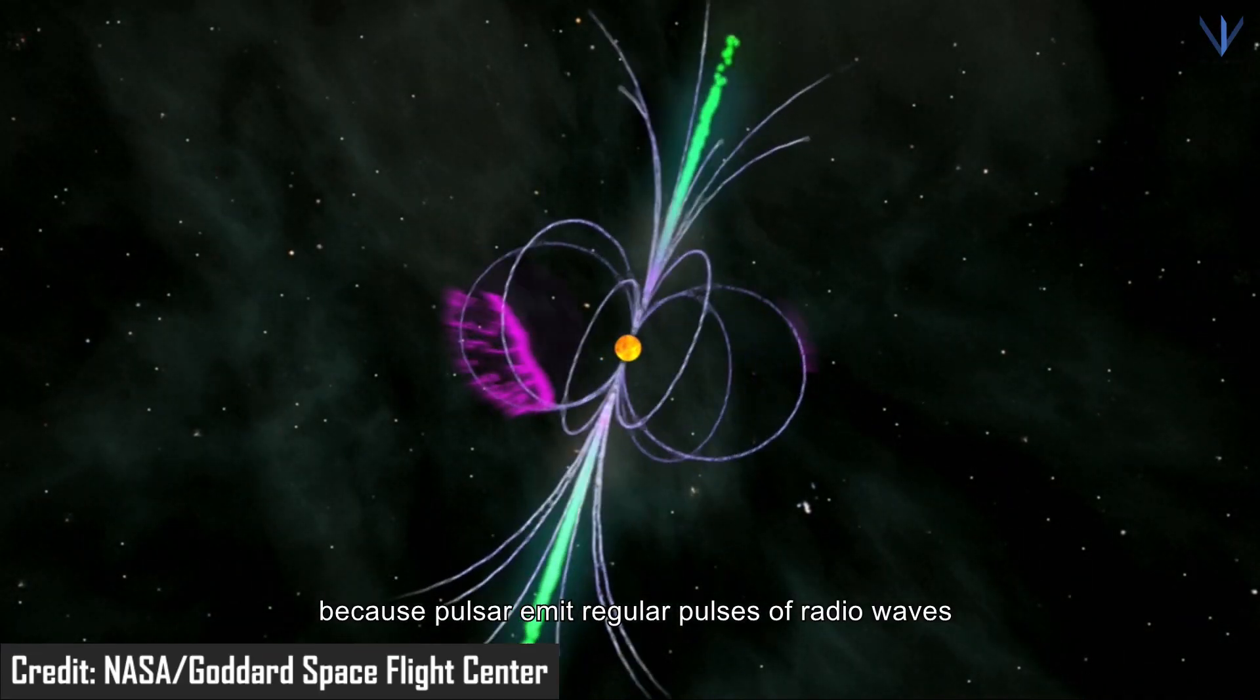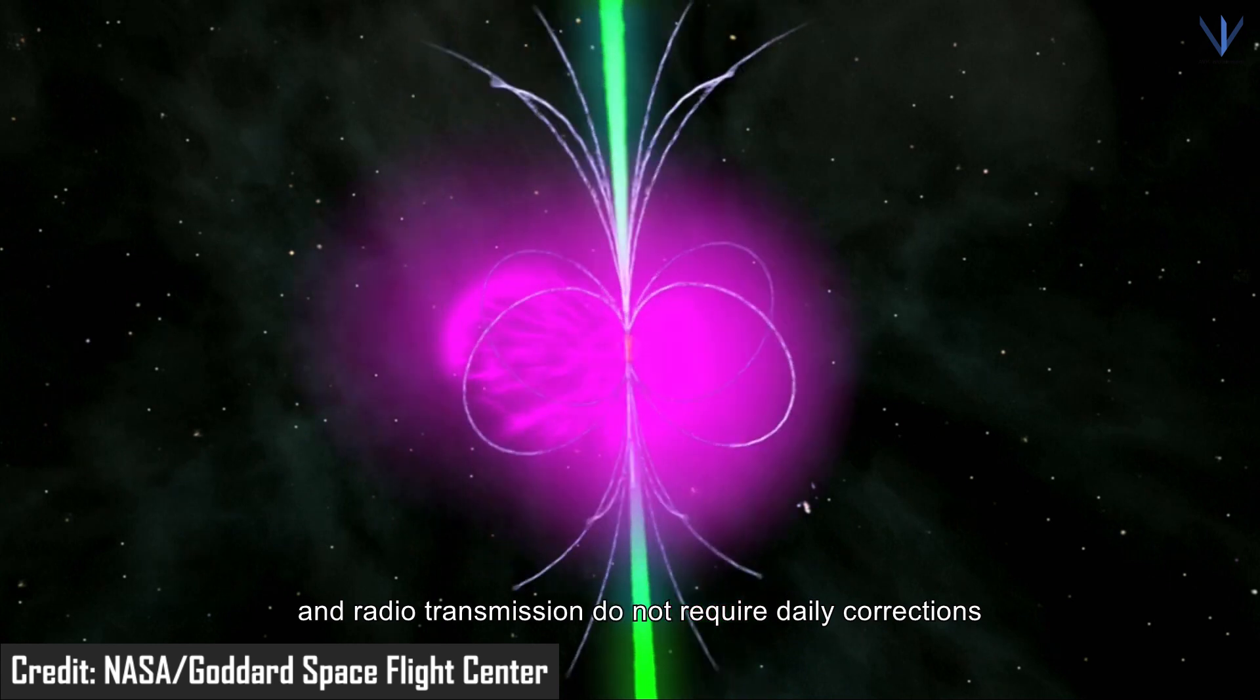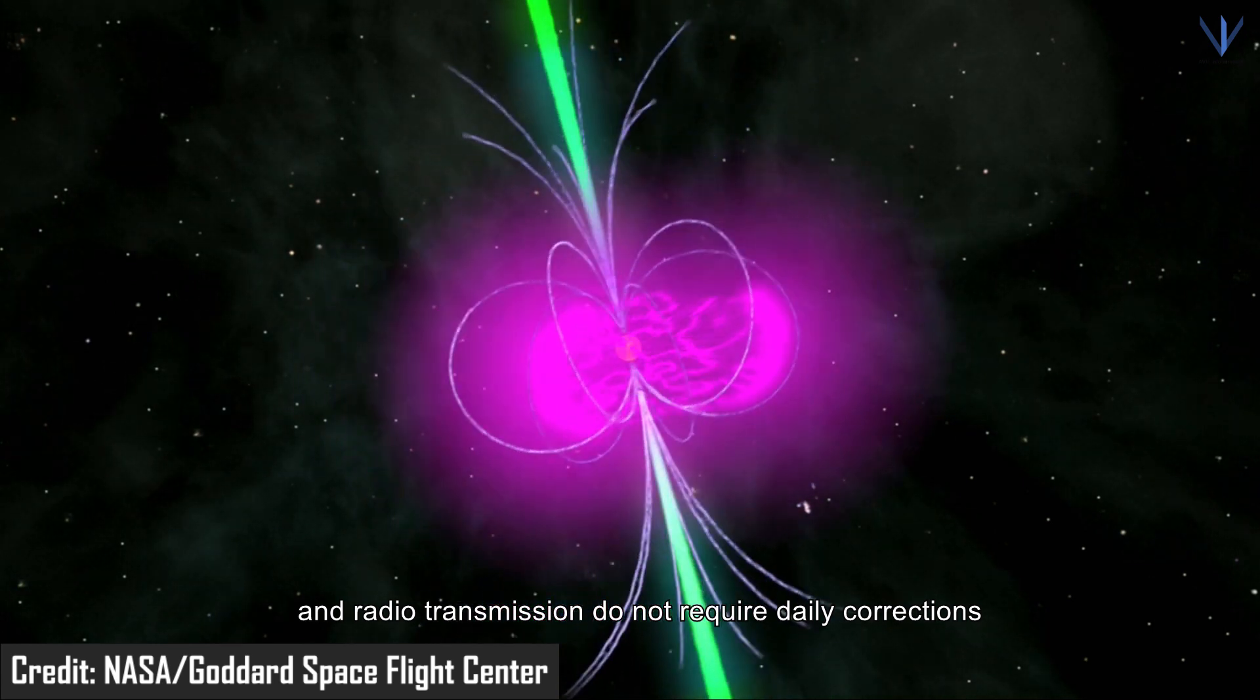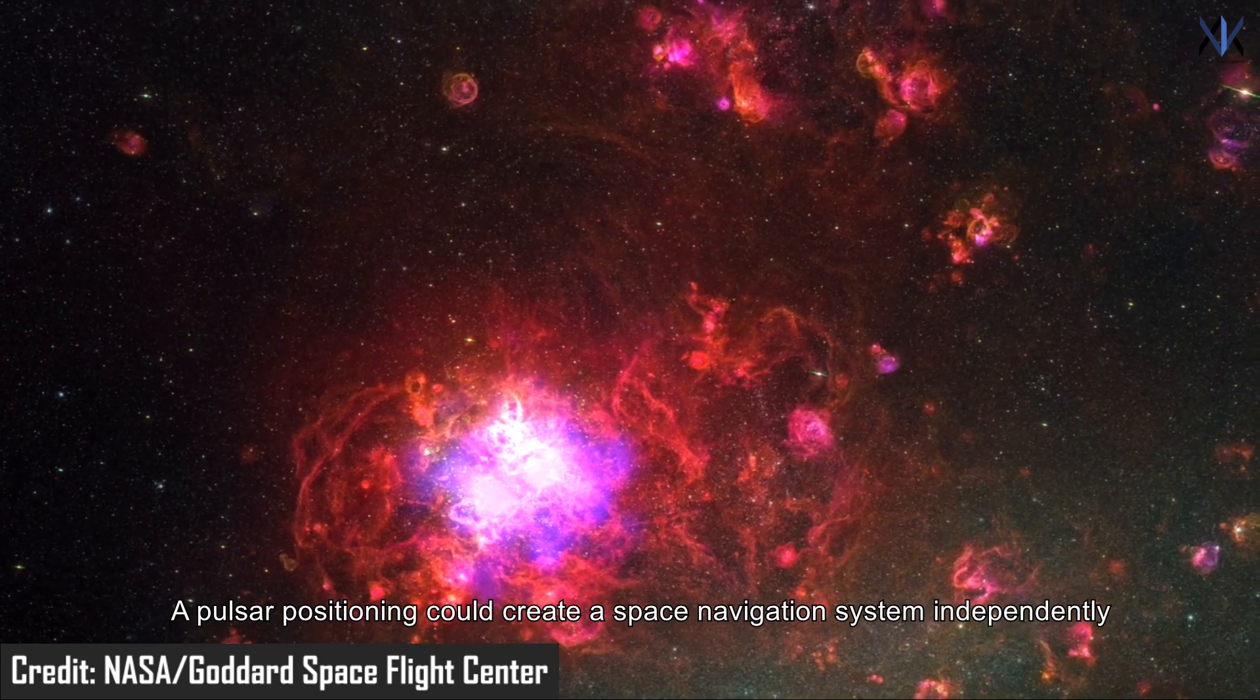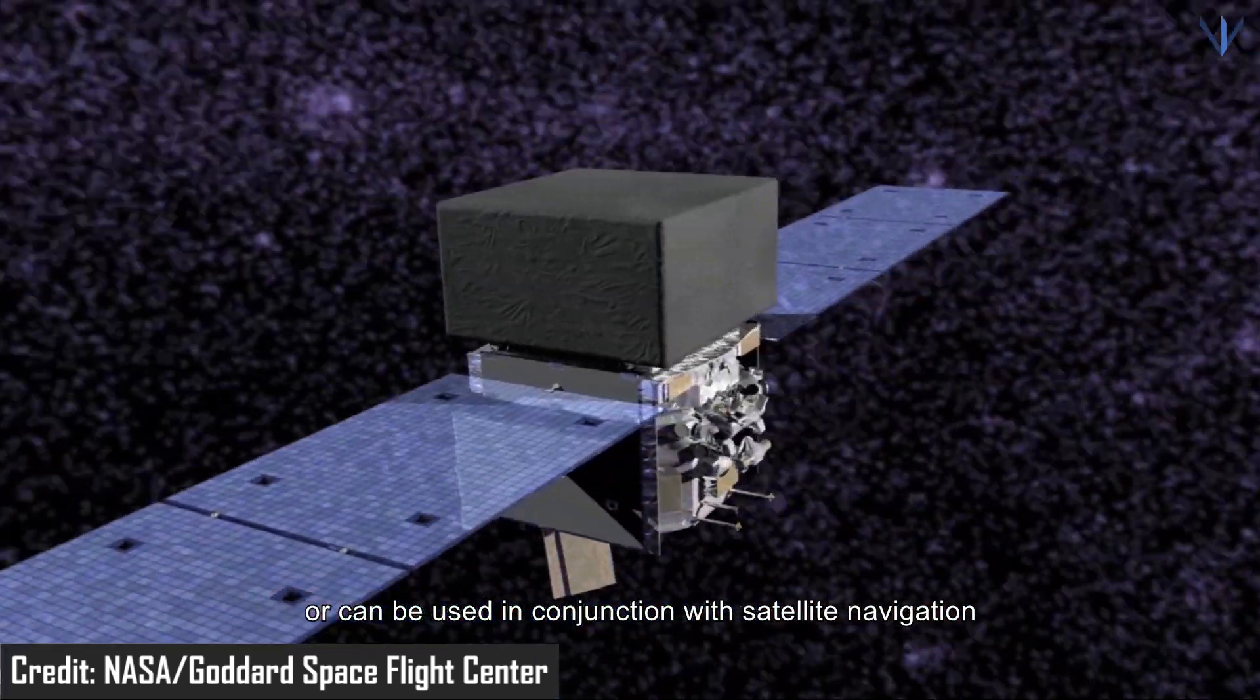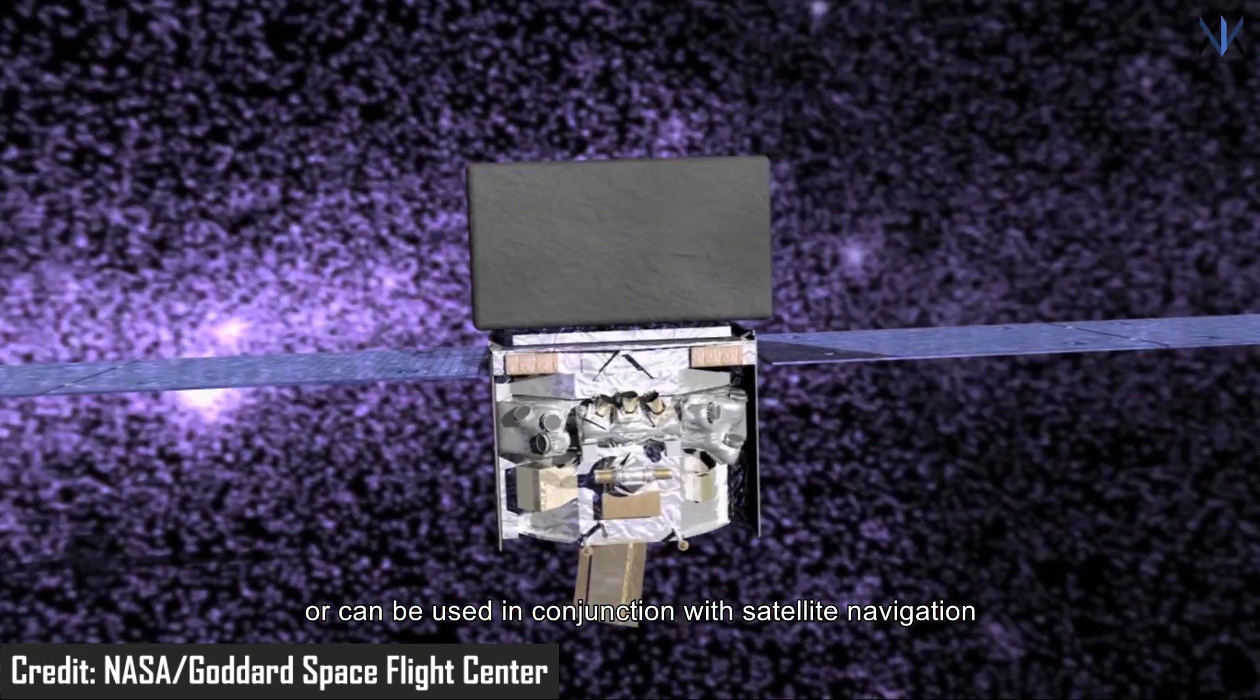Because pulsars emit regular pulses of radio waves and radio transmissions do not require daily corrections, a pulsar positioning system could create space navigation independently or be used in conjunction with satellite navigation.